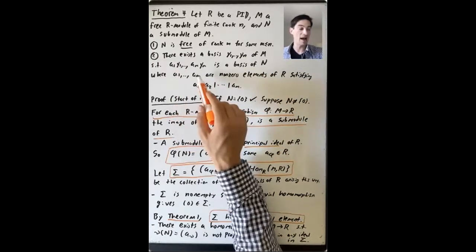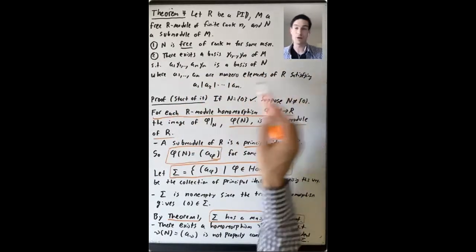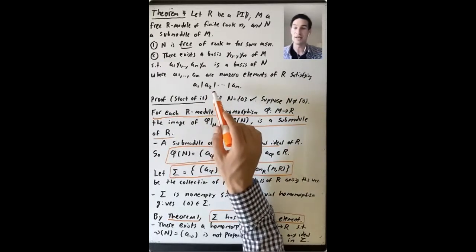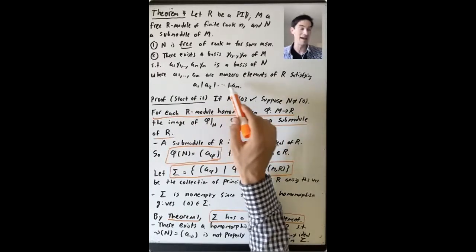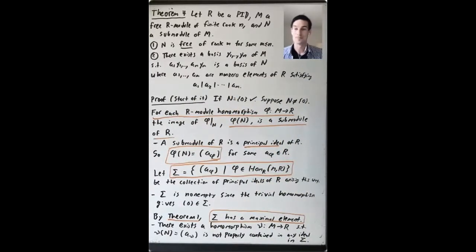Where these AIs are non-zero elements of the ring, satisfying the divisibility conditions A1 divides A2, A2 divides A3, up to AM minus 1 divides AM. So I just want to get the proof started in this video, and we'll finish it in the first video of the next lecture.